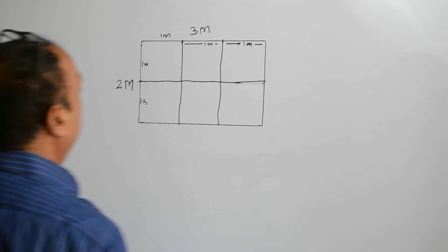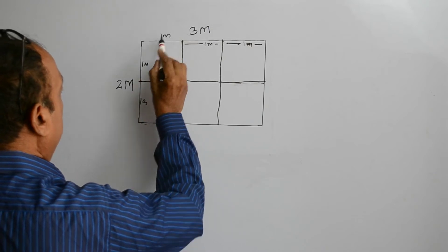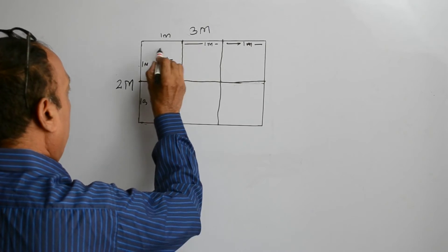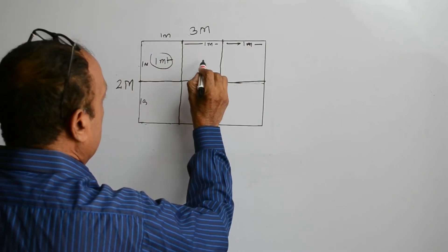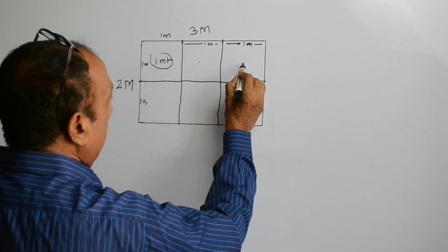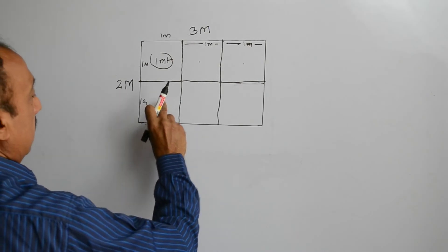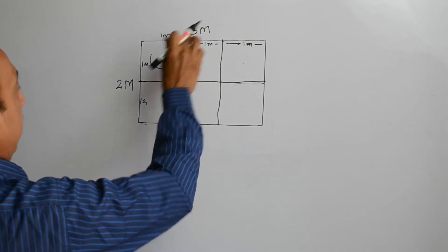So, we have got 6 squares of 1 meter each, 1 meter by 1 meter. So, 1 meter square, this is a square of 1 meter. Similarly, this is also a square of 1 meter. All these 6 are 6 squares of 1 meter each.